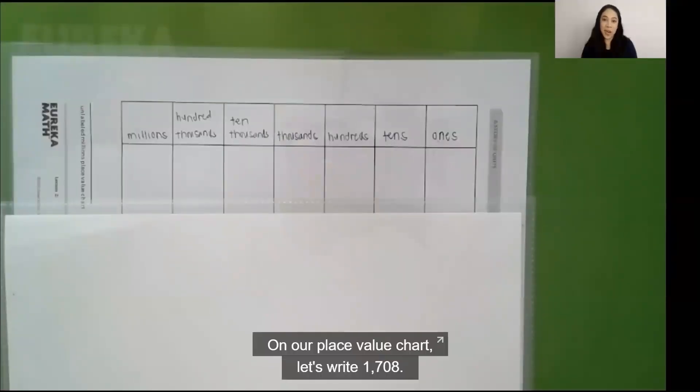On our place value chart, let's write 1,708.